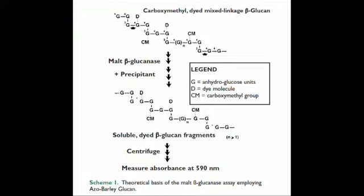The theory of the malt-beta-glucanase assay procedure is shown in this slide. The substrate is carboxymethyl-dyed mixed linkage beta-glucan. This is hydrolyzed by malt-beta-glucanase to smaller degree of polymerization fragments that remain in solution on addition of a precipitant.